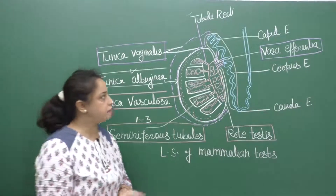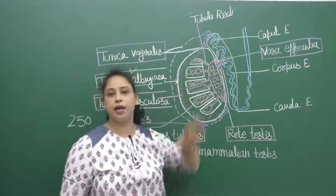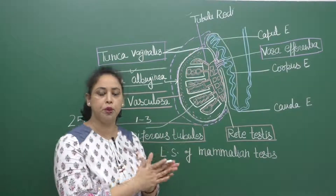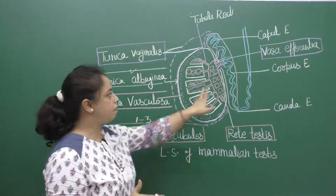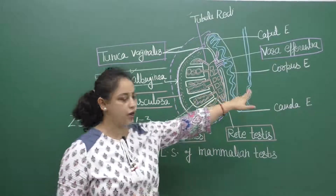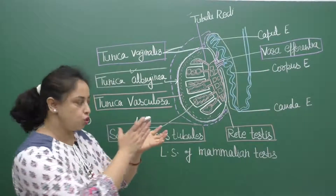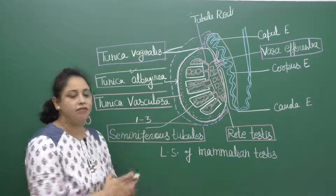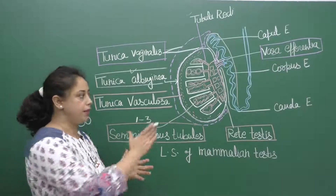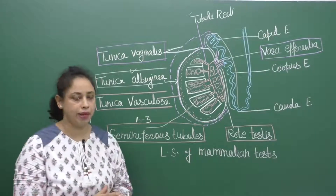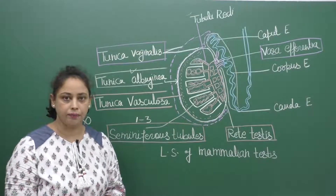The epididymis has three parts. The head part is called caput epididymis, the middle part is called corpus epididymis, and the last tail portion is called cauda epididymis. In the diagram, epididymis is simply labeled as 'E'.